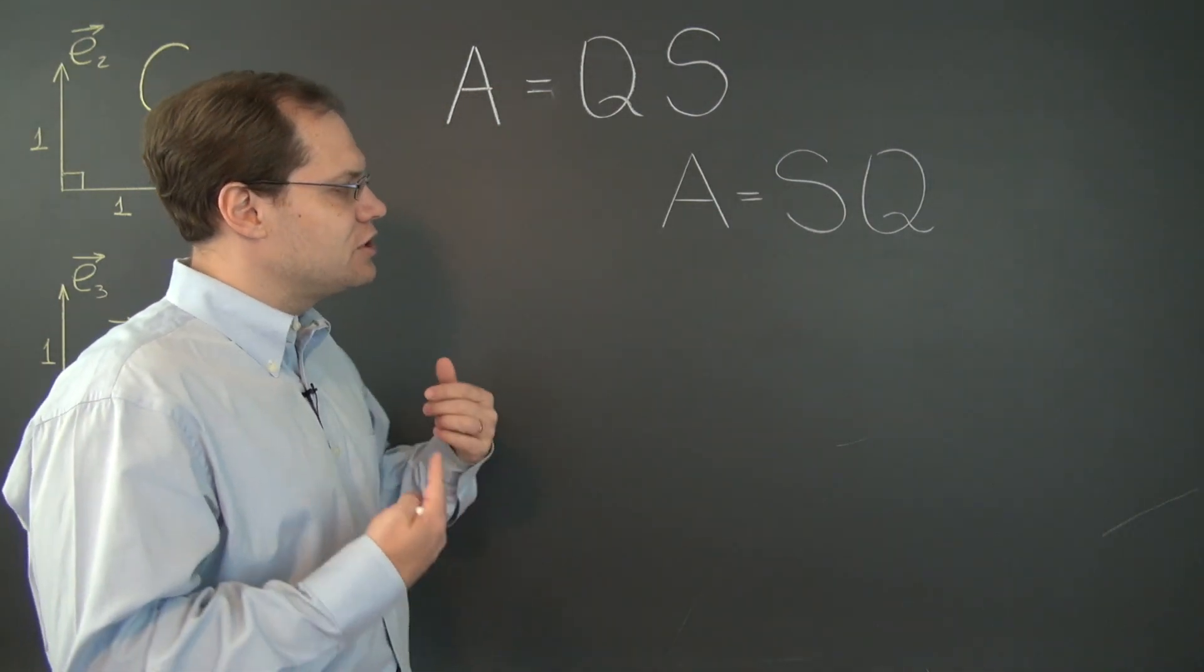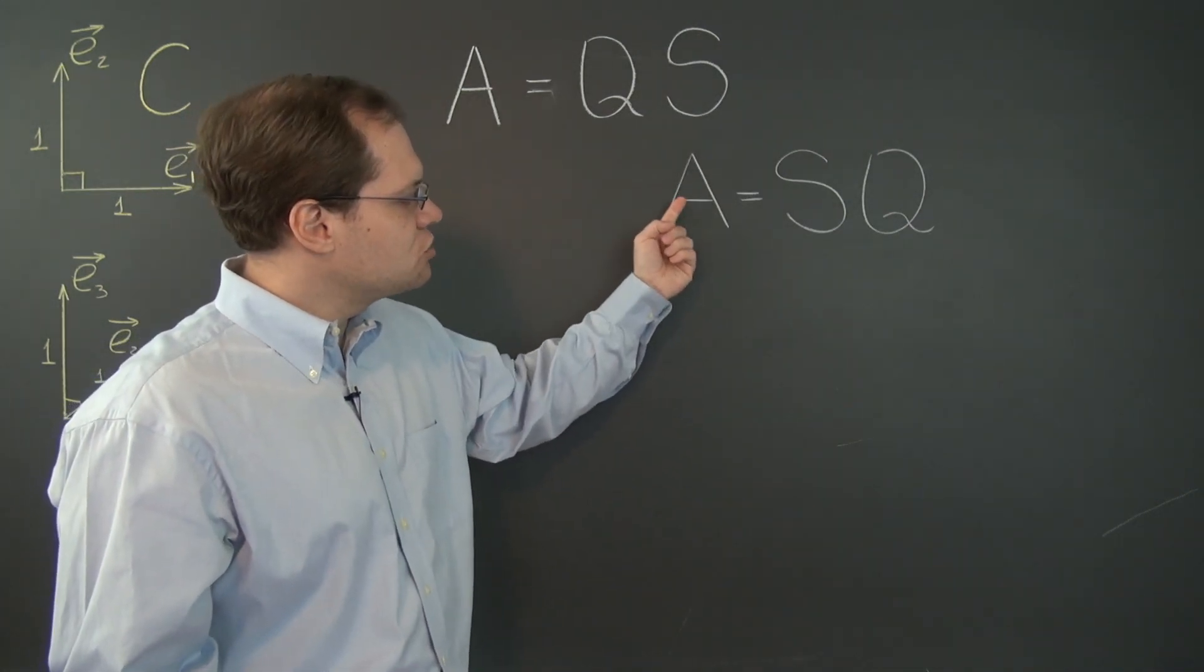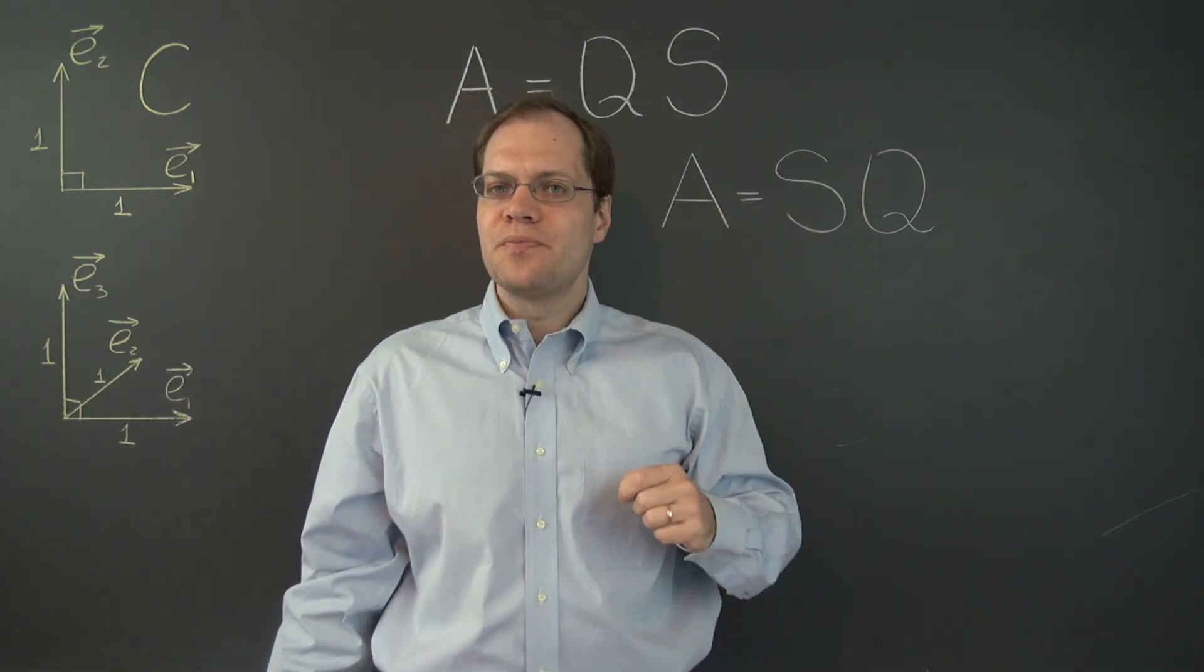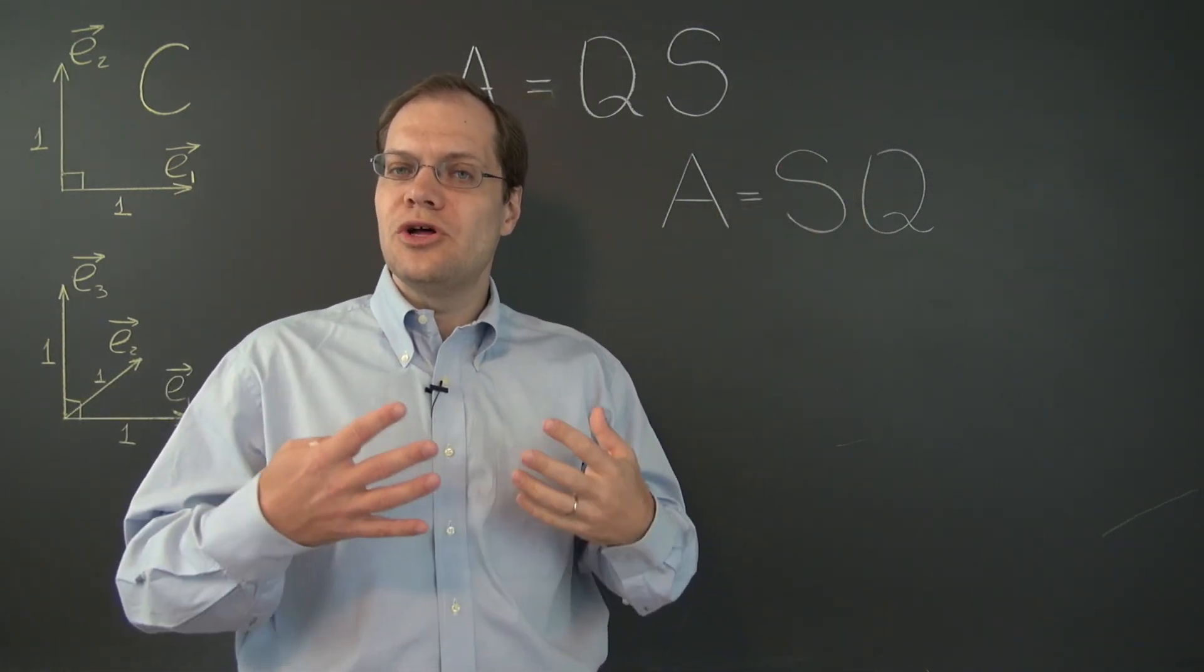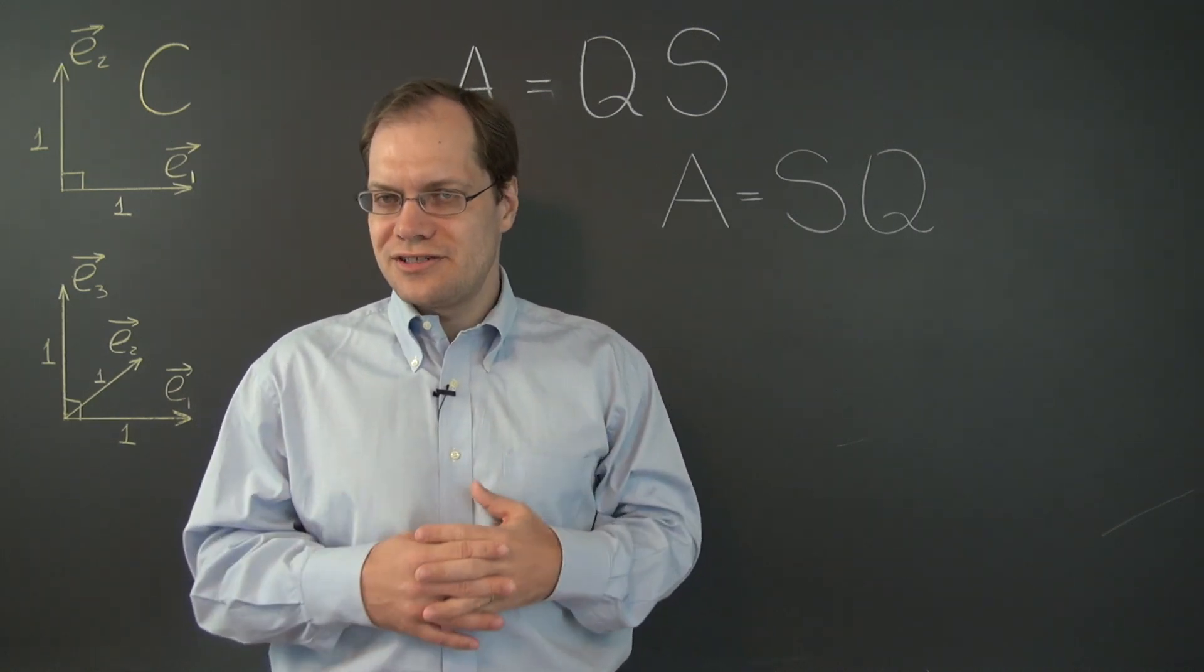A transpose A will no longer do the trick because A transpose A will be Q transpose S transpose S transpose Q, and Q transpose and Q are no longer next to each other, which was critical in our original derivation.